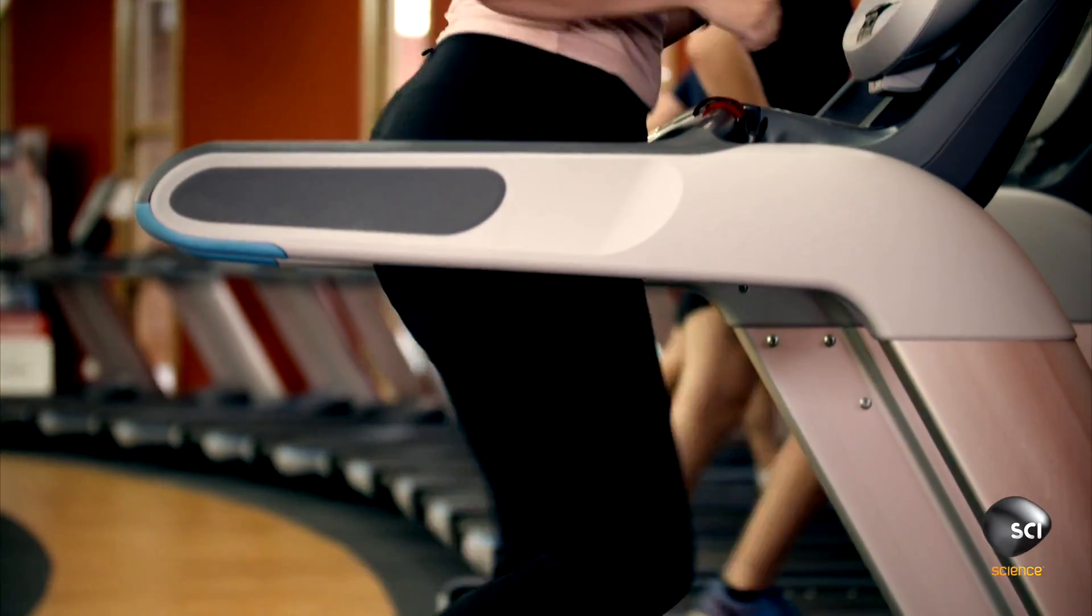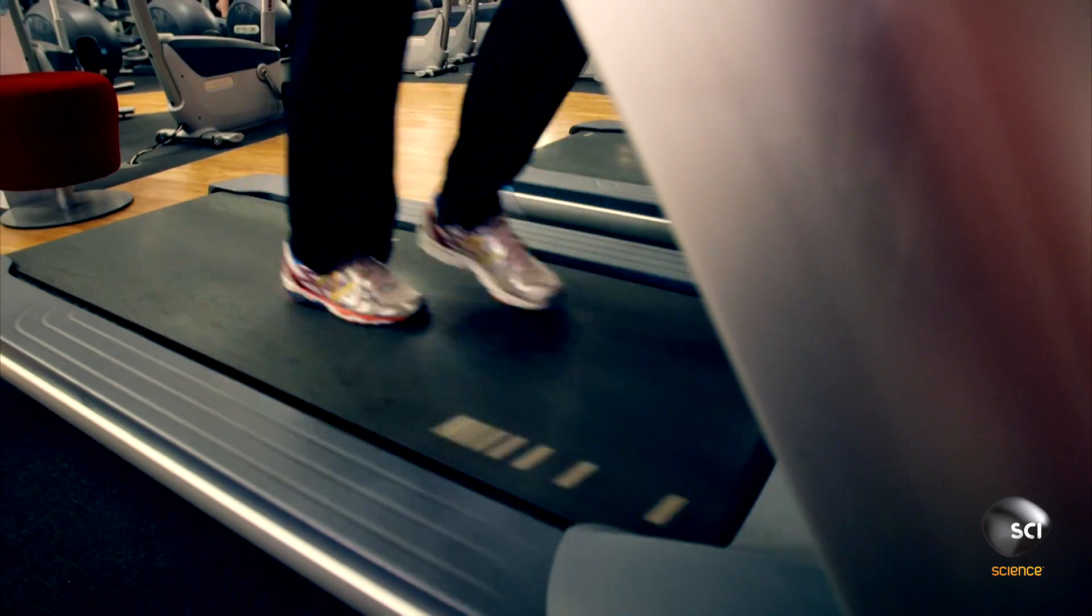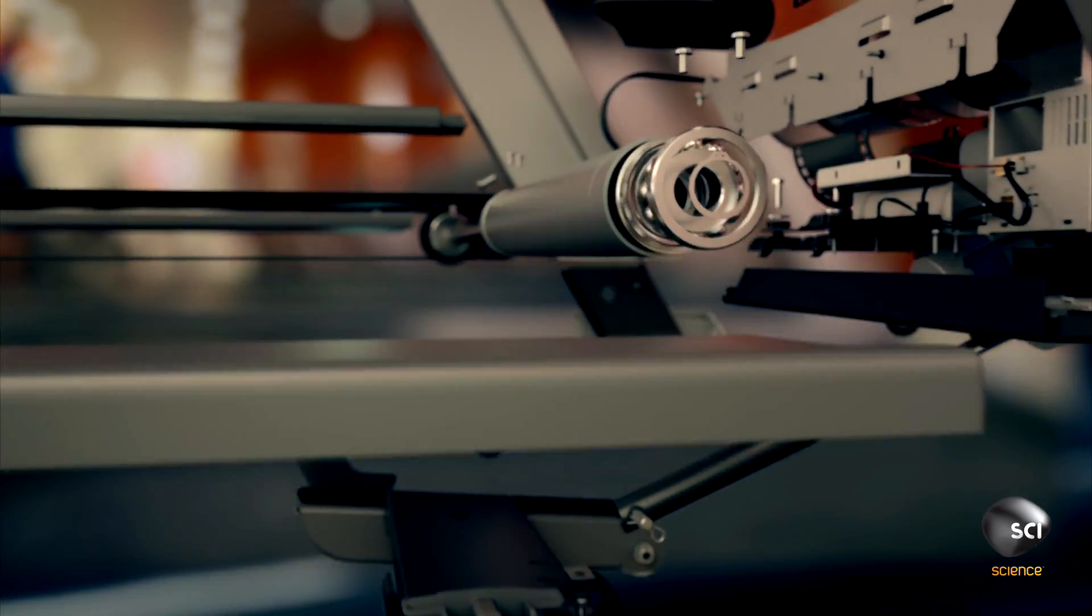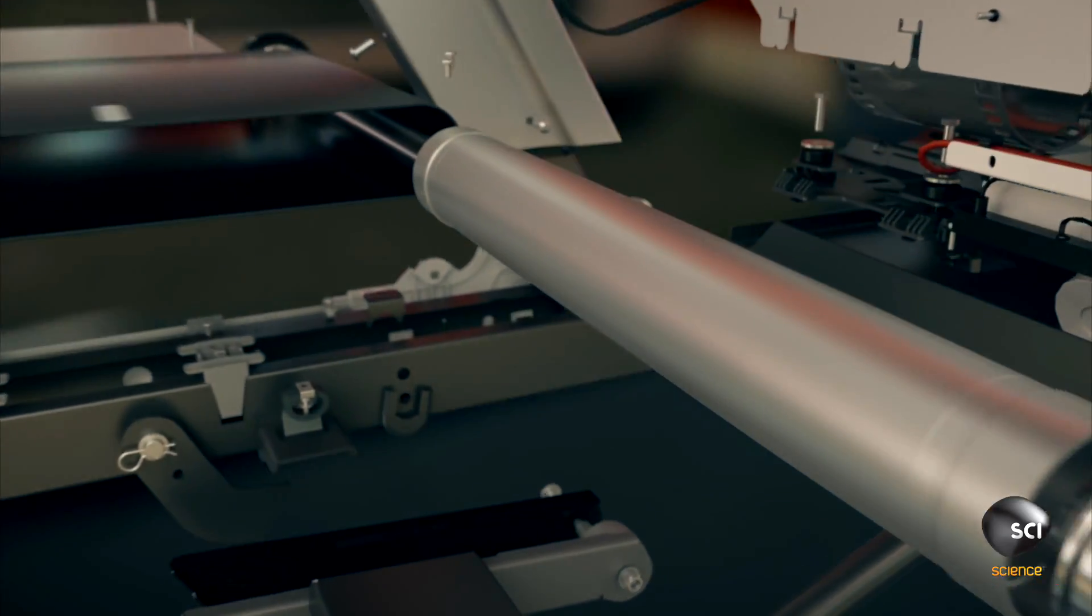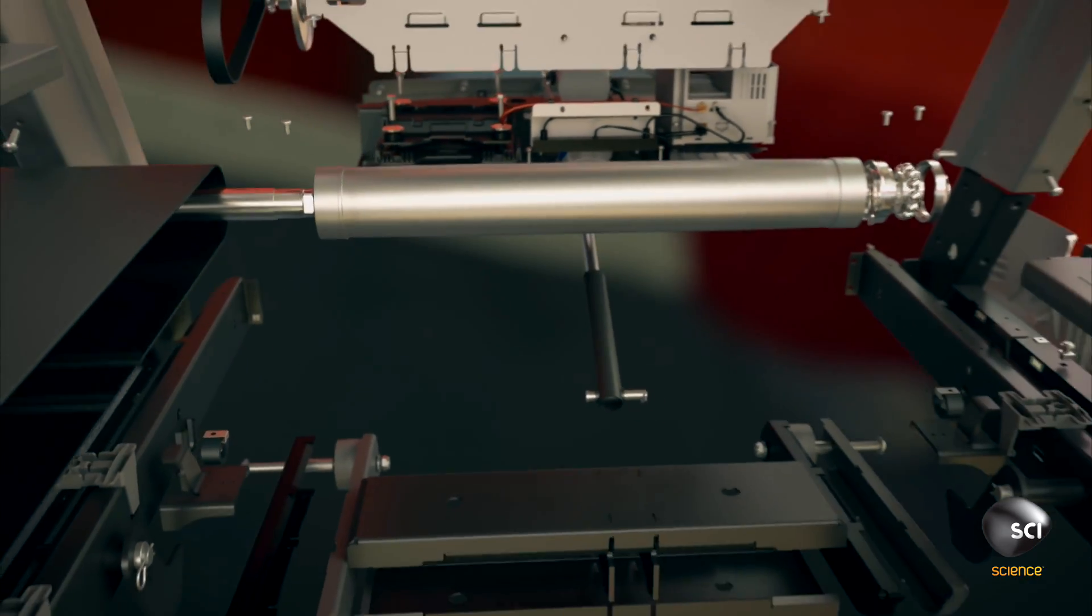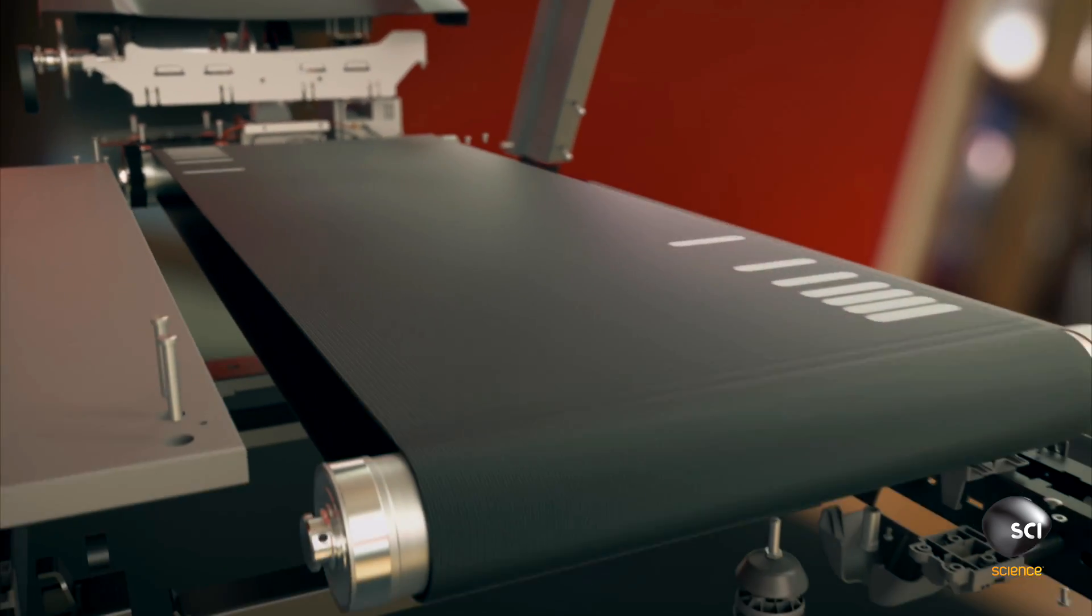The treadmill's frame is strong, but the running deck must also be ultra-stable to give a comfortable workout. The belt glides around two finely balanced 26-pound steel rollers. These run on four bearings to keep it rock steady.